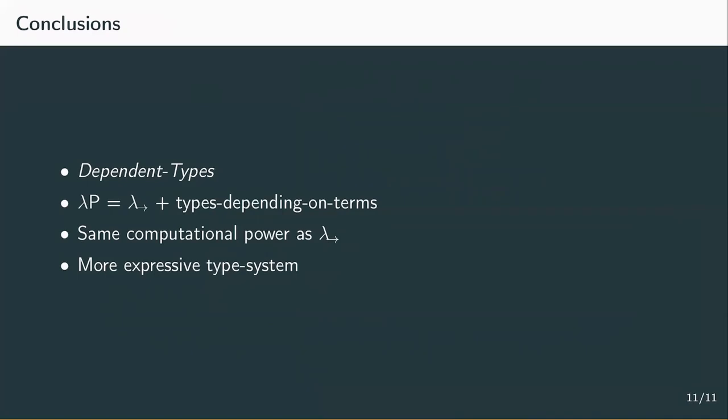Although the calculus doesn't have more computational power than the simply typed lambda calculus, just like lambda weak omega didn't, dependent types allow you to express many properties that you can't express in type systems without dependent types, such as associating a list with its length.